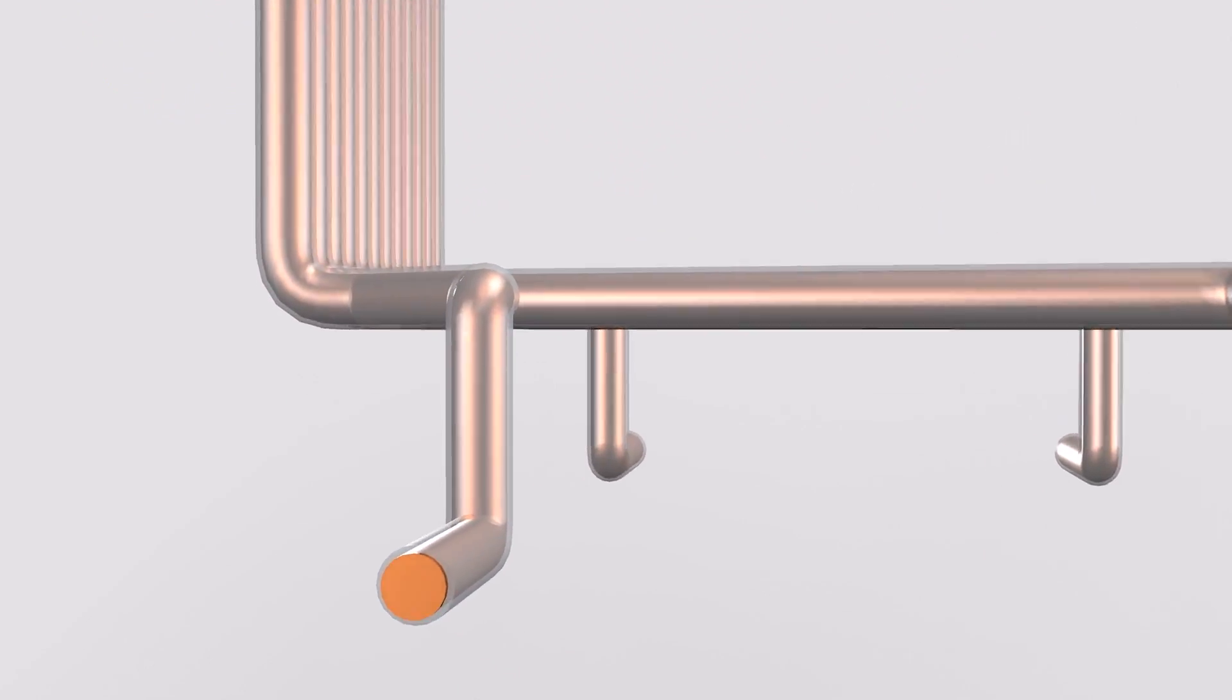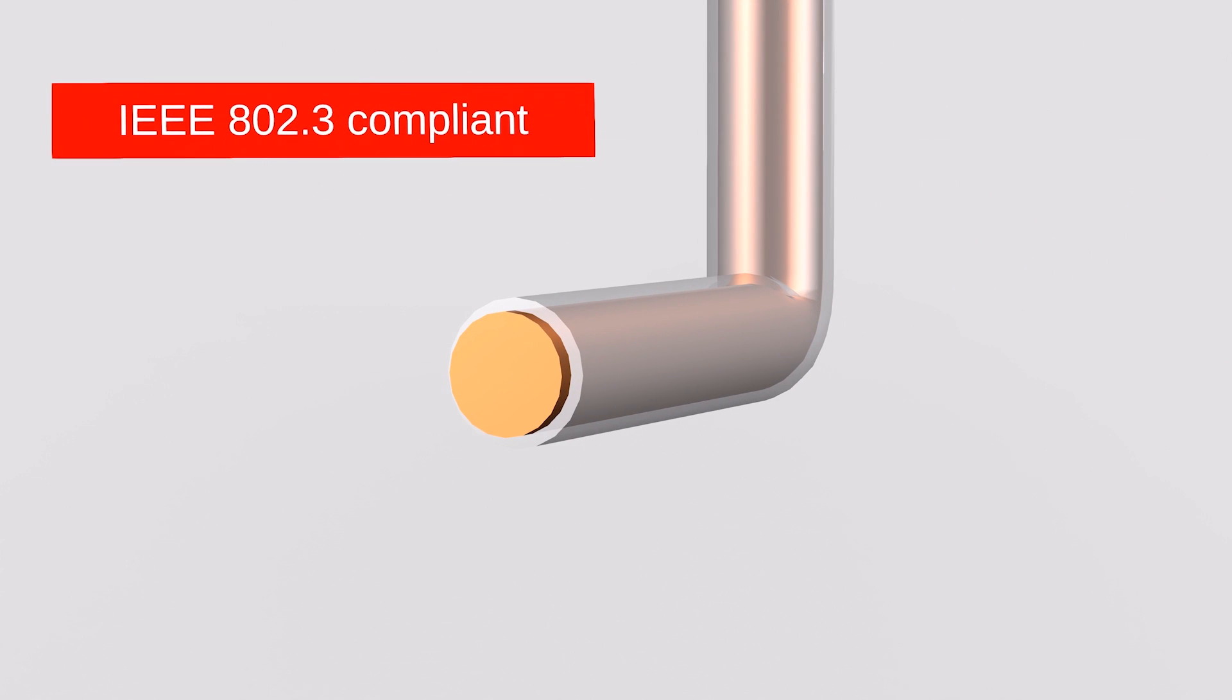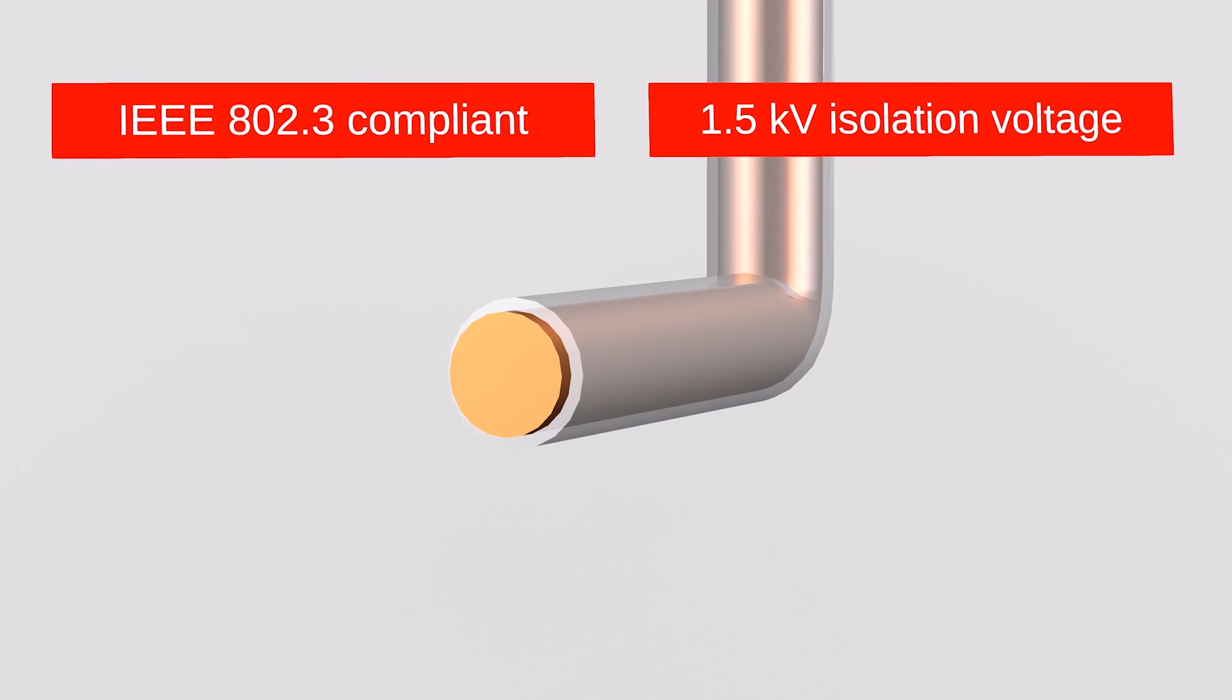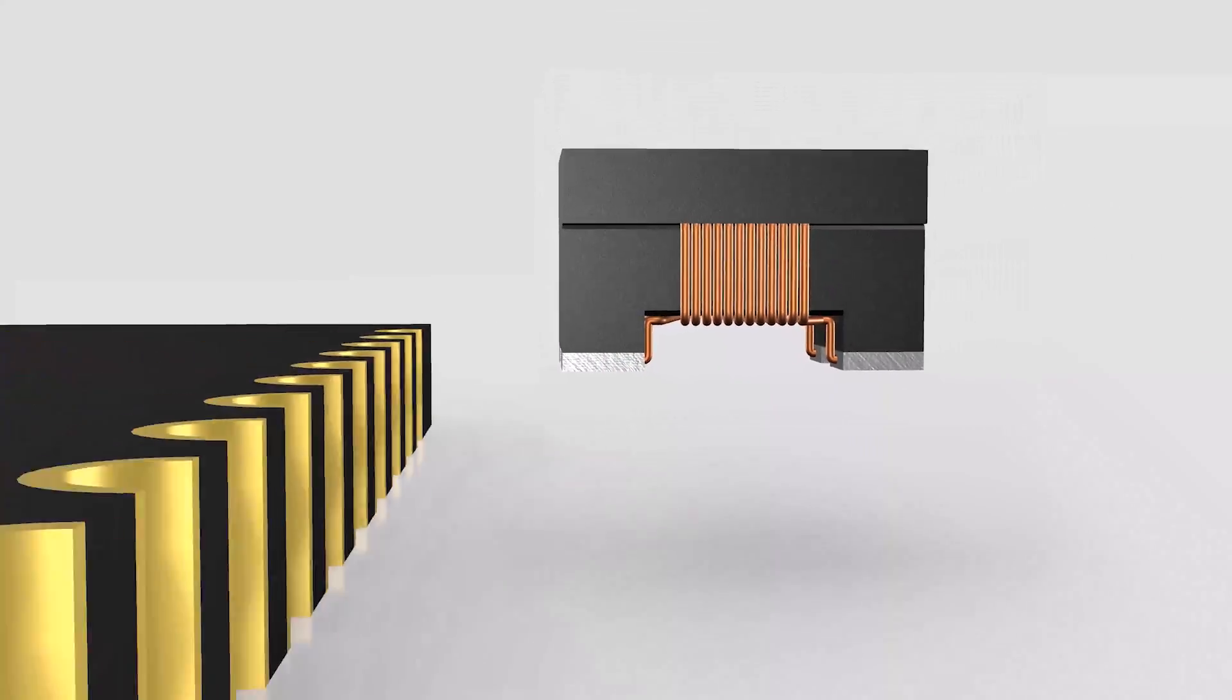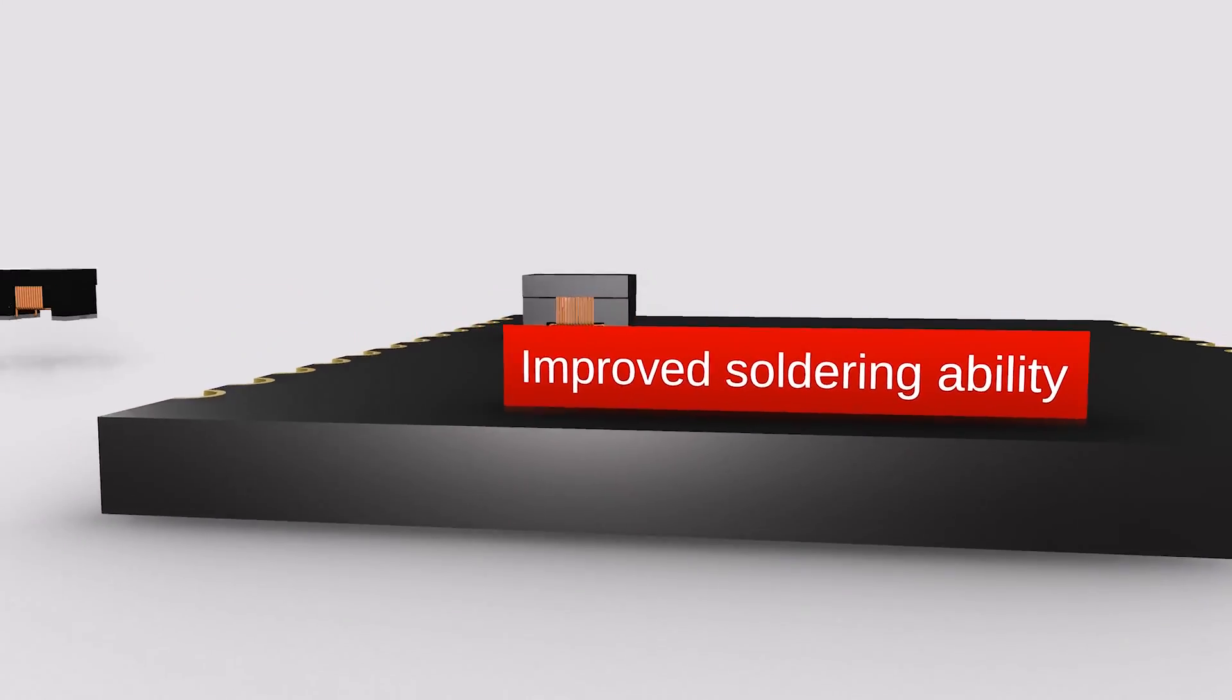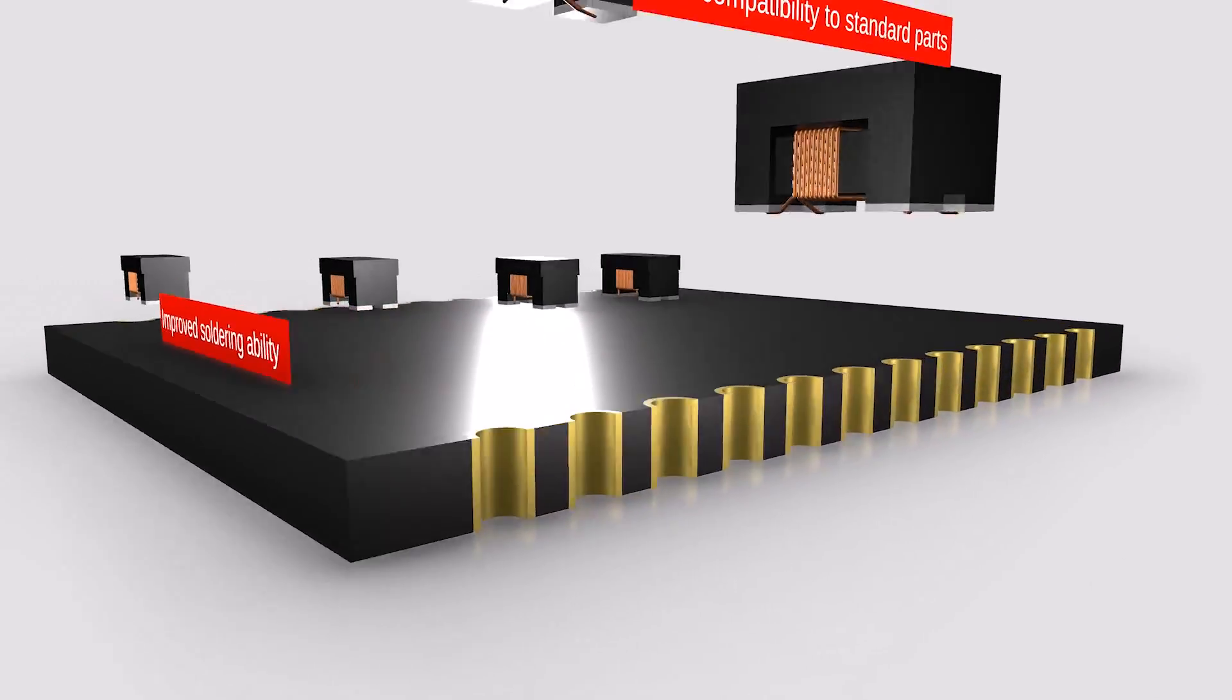The Wee-Lan AQ is IEEE 802.3 compliant with an isolation voltage of 1.5 kV. Further features are improved soldering ability and pad compatibility with 10, 100 and 1000 base T standard parts.